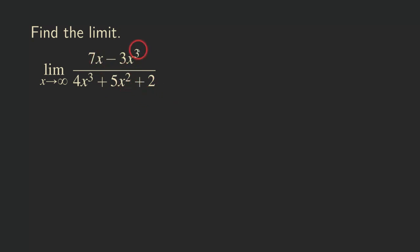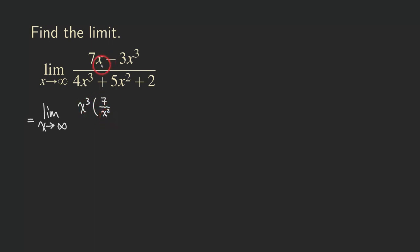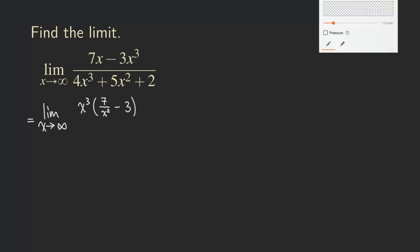First, we are going to look at the highest power of x for the numerator, which is x cubed. So we factor out x cubed from the numerator. Inside the parentheses, we have 7x, and factoring out x cubed from 7x means we need x squared in the denominator, so that gives us 7 over x squared. If you multiply x cubed by 7 over x squared and reduce the fraction, you get x. For the second term, since we factored out x cubed, we are just left with negative 3.